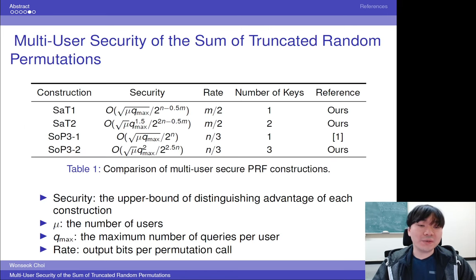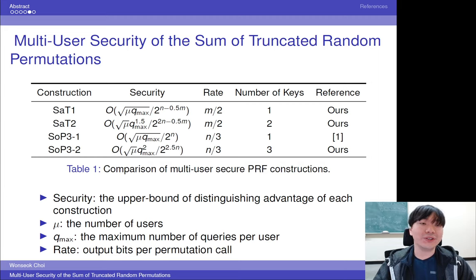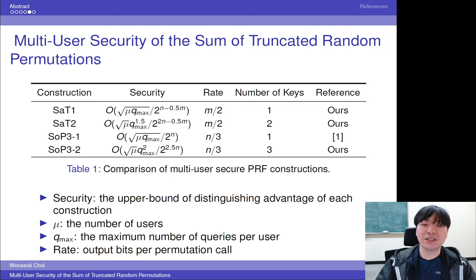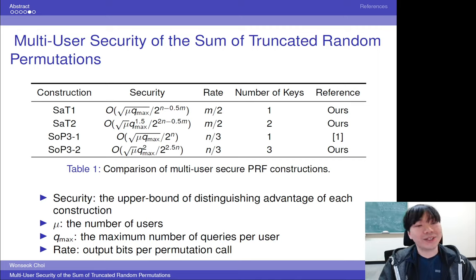Here is the comparison table for our research and SOP-3-1. M is the output bits, mu is the number of users, and qmax is the maximum number of queries for each user. The security bounds of SOP-3 and SAT are both meaningful when the number of users is huge. We can enhance the efficiency of SAT by truncating a smaller number of bits when the number of users is small or a lower security level is allowed. In other words, it is possible to take a trade-off between the number of users, security level, and efficiency.